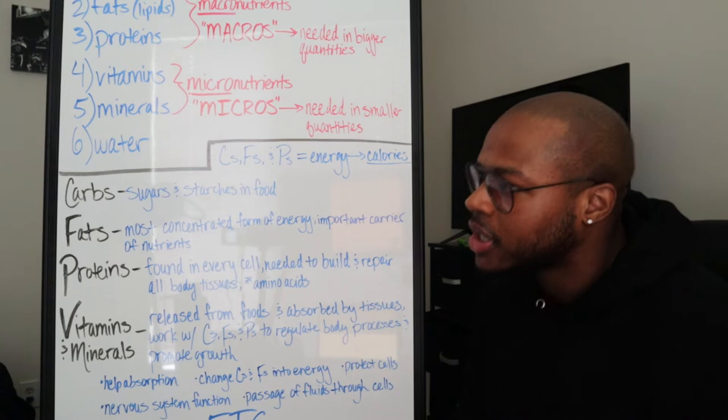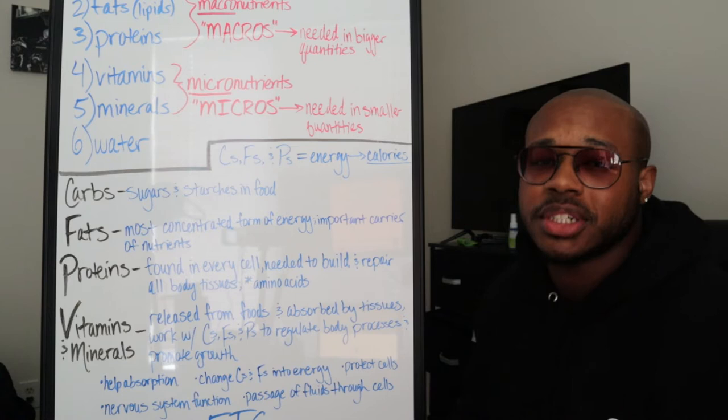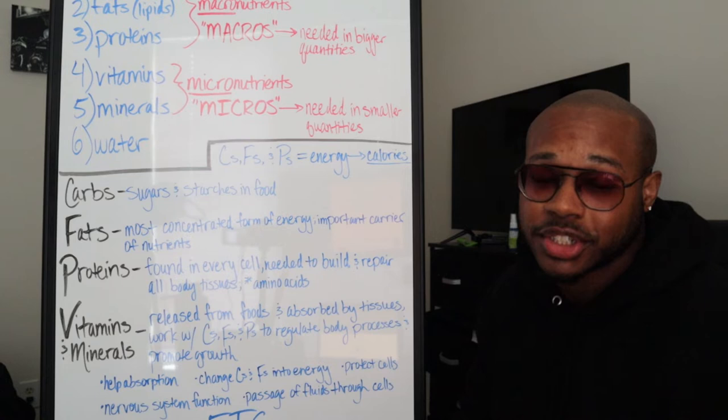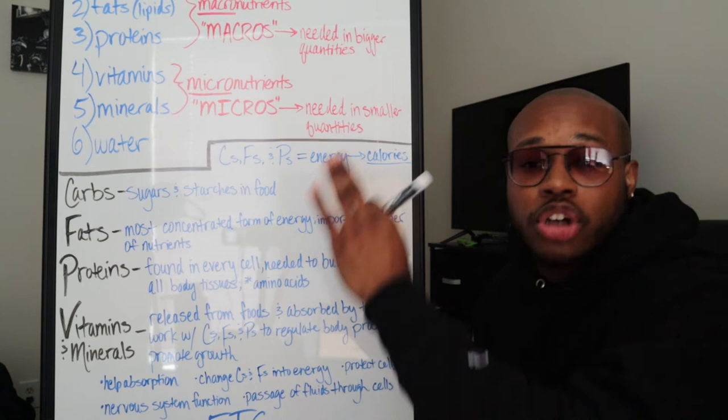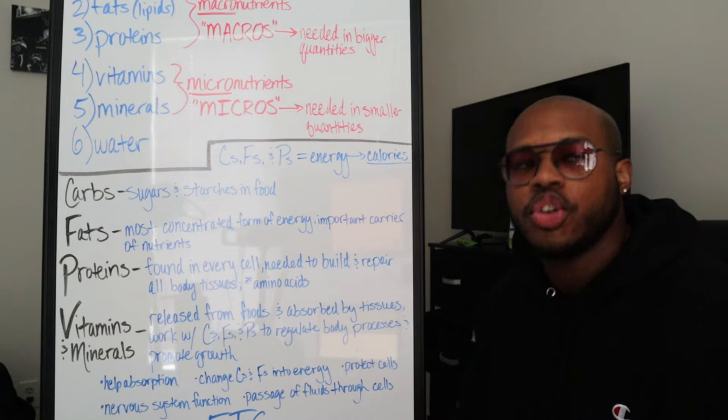So first let's get into carbs. What are carbs? Carbs are essentially the sugars and starches that are inside of your food, and carbs are made of carbon, hydrogen, and oxygen. Now that's not really important for you to know, but I just had to throw that in there.